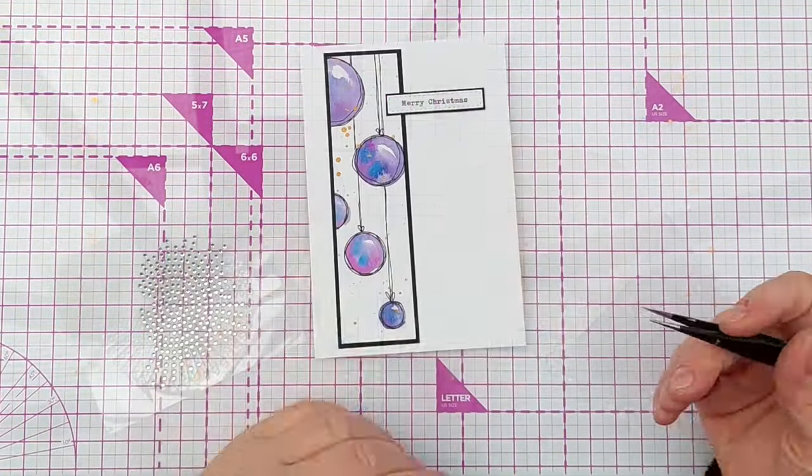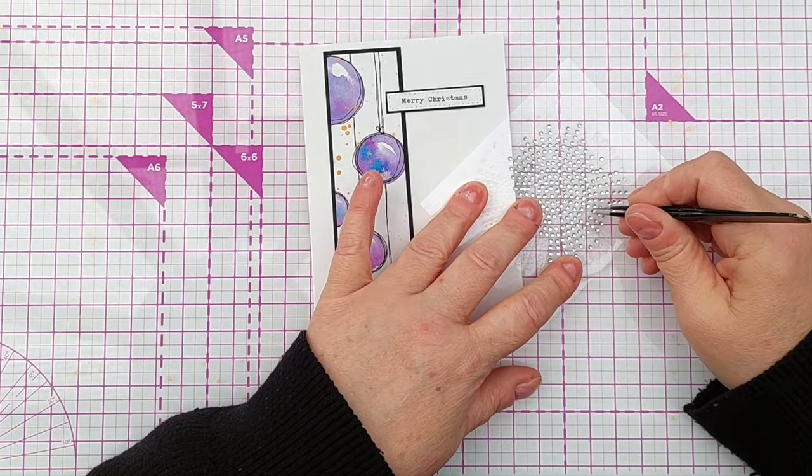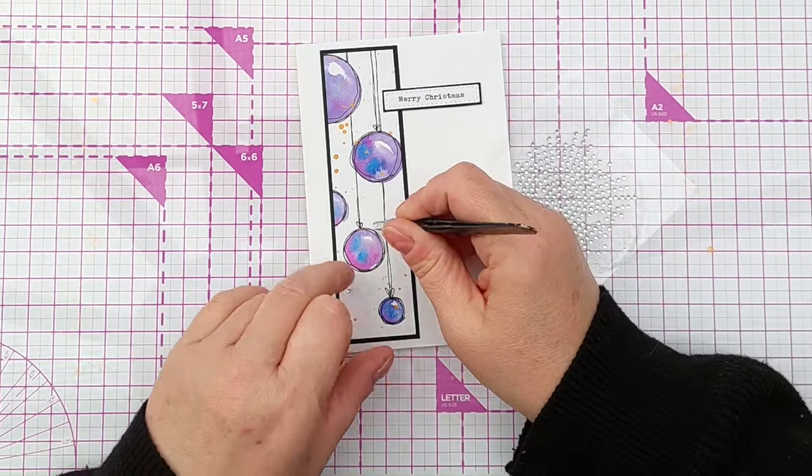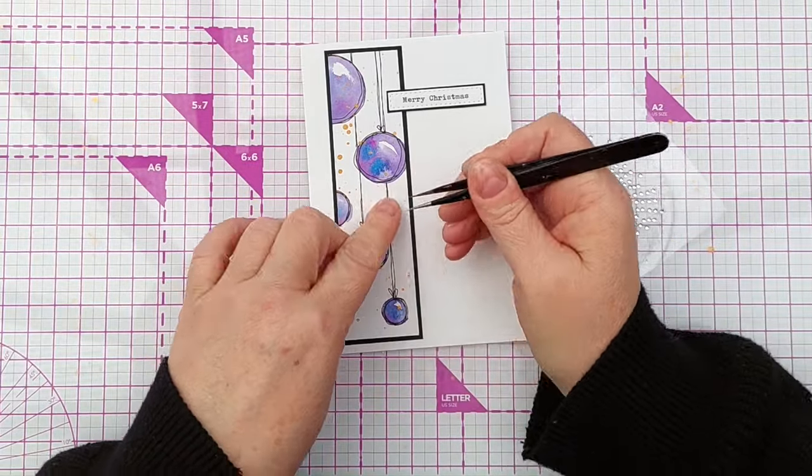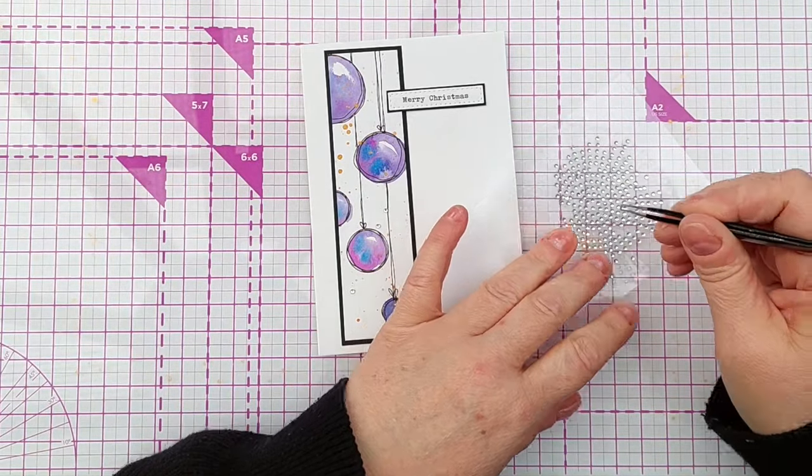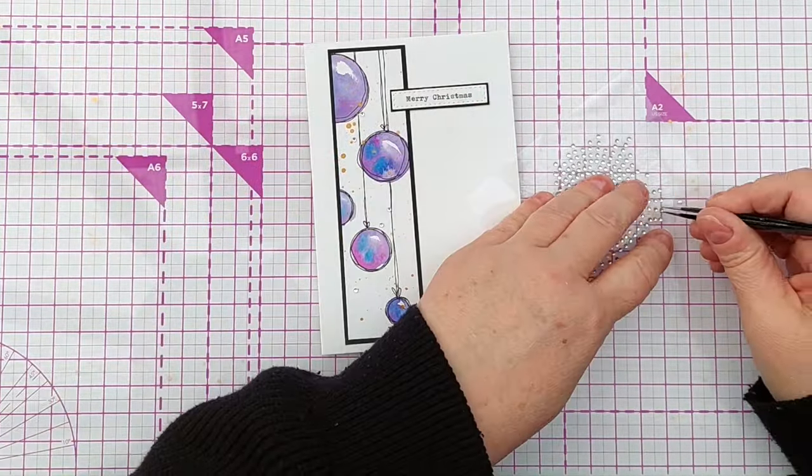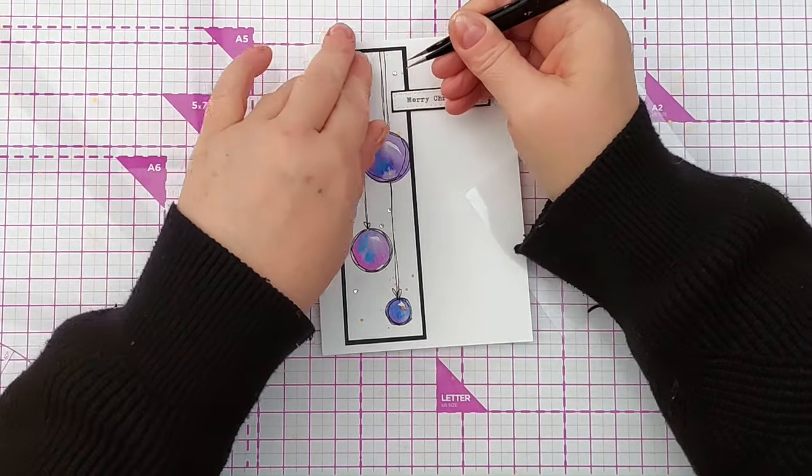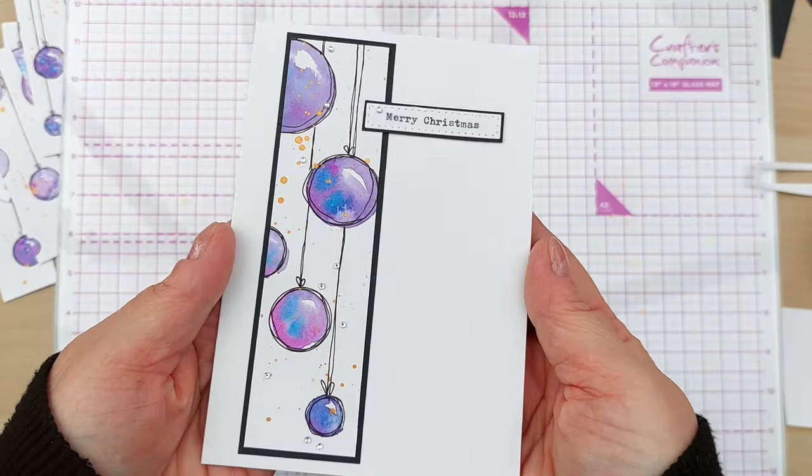And for a bit of extra sparkle, I've got these teeny tiny little gems that I can dot about. They're so thin they don't add much bulk to the card, so I shouldn't stop it going through the post. And I think they just lift everything with a bit of extra brightness.